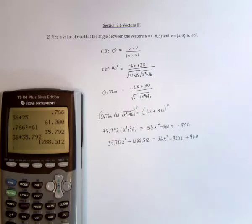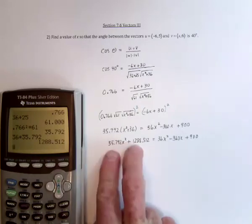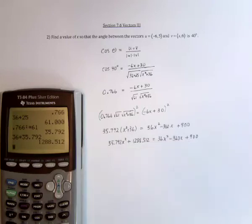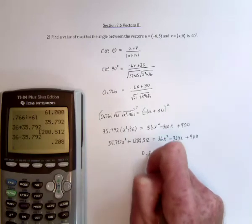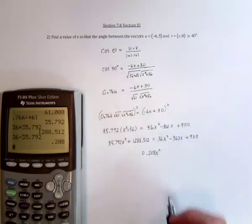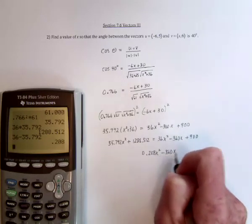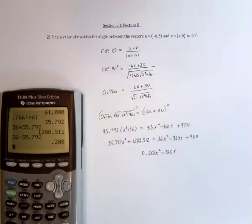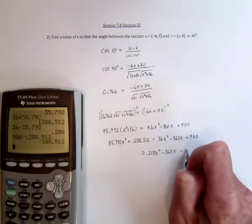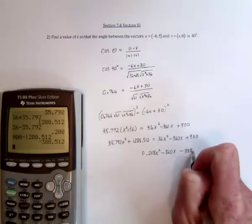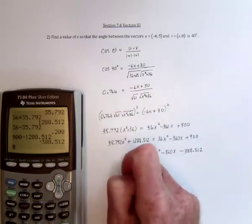And now we're going to need to use the quadratic formula, but first take these two and subtract from both sides. So for this it's going to be 36x squared minus 35.792x squared equals 0.208x squared minus 360x. And then 900 subtract 1288.512 is minus 388.512. And now it's set equal to 0.